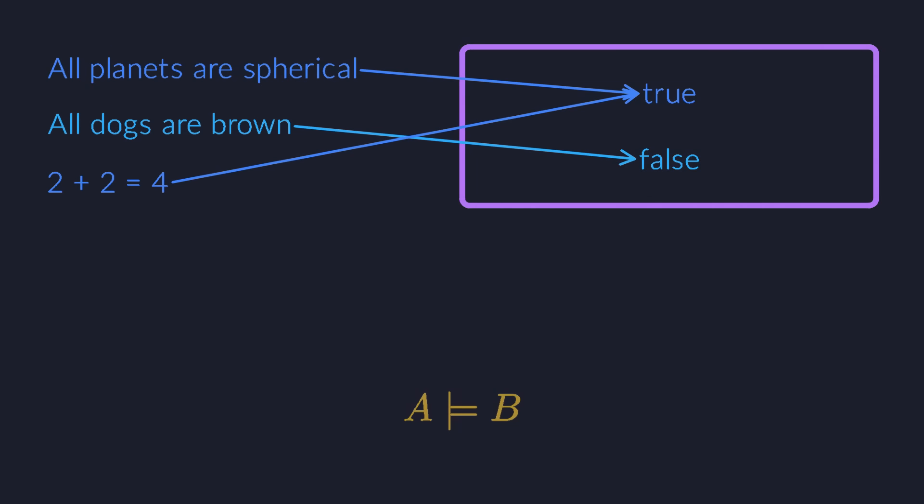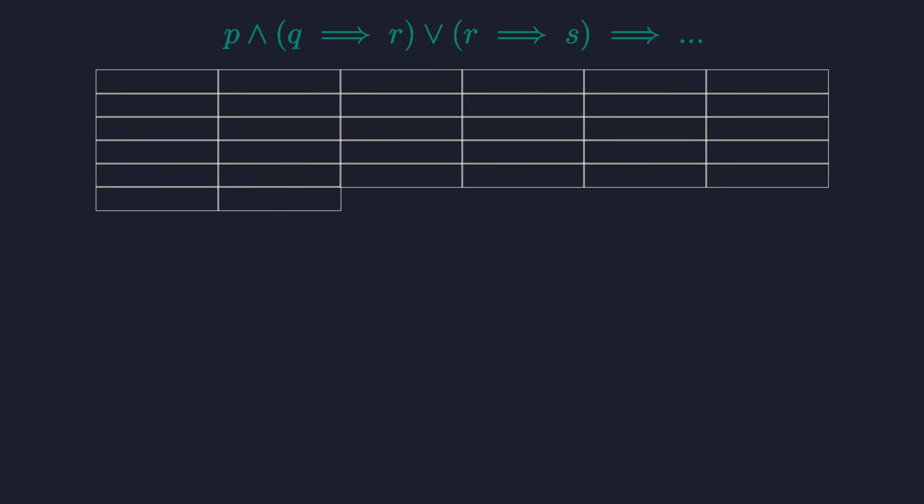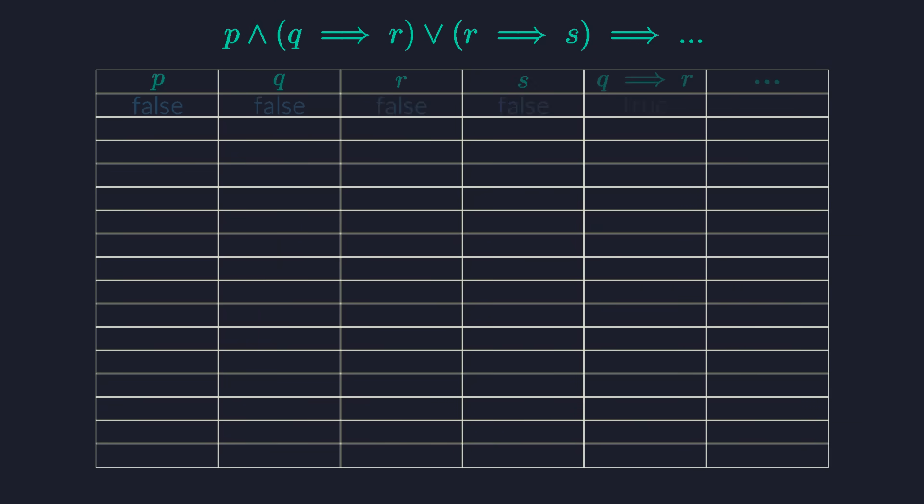The notation uses a turnstile with two lines instead of one. So this expression means that B follows semantically from A.